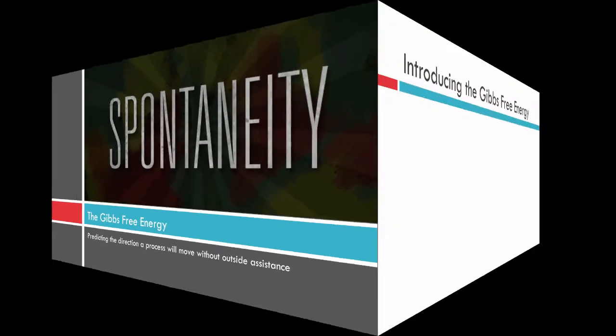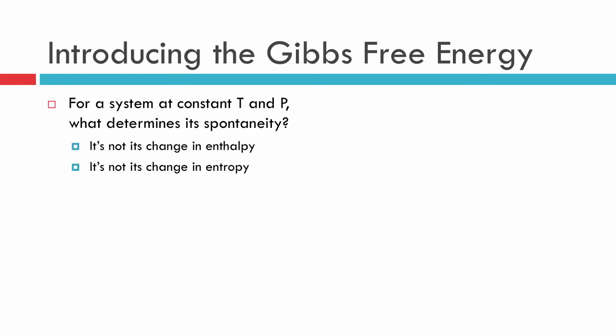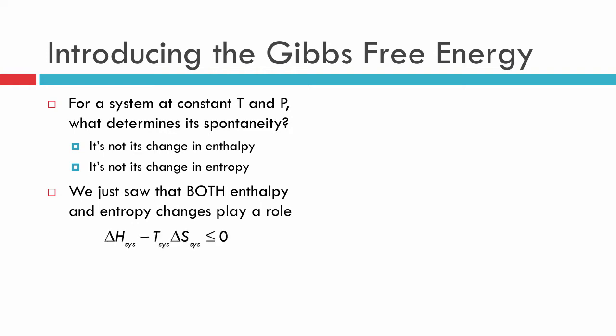Let's start by introducing this whole idea of what's called the Gibbs free energy. Here's what we figured out: for a system at constant temperature and pressure, there are some things that determine its spontaneity, but it's not just the enthalpy change and it's not just the entropy change. It's actually a combination of both of these things that play a role. We saw that delta H minus T delta S—if we knew that, if we could do that math, we would end up with a way to predict whether something was going to happen spontaneously or not.